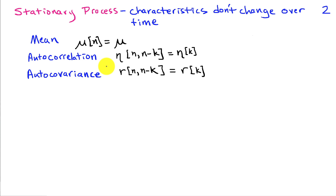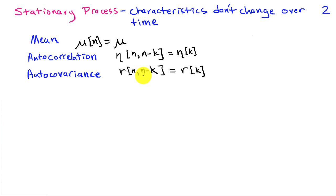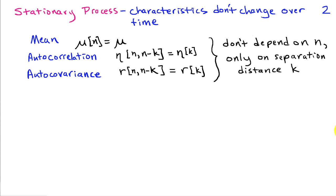For a stationary process, the mean, which had been a function of time n, is just one constant value mu — the mean is the same at every point in time. And the autocorrelation, instead of depending on n, only depends on how far apart the two samples are. We have eta of k, and for the autocovariance it's the same thing — the autocovariance does not vary for different values of n. It only depends on k, where k is the lag or the distance between the two samples.